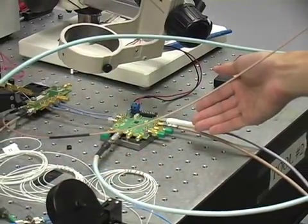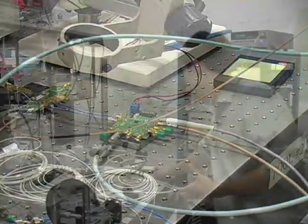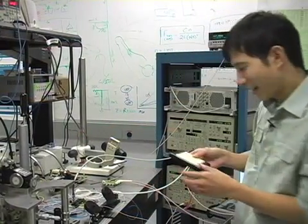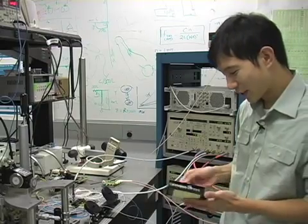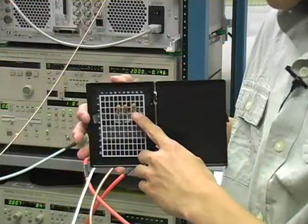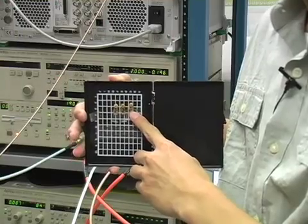This is where we mount the individual APDs. They are very tiny. The package device would look like something in here. This is the package. The actual device is much smaller.